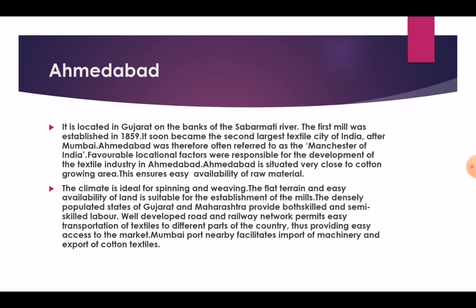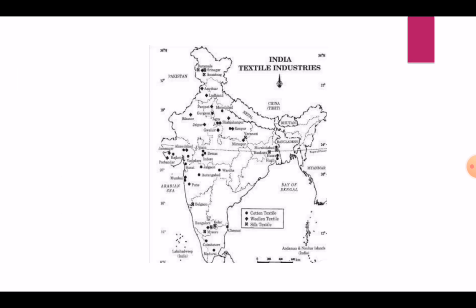Ahmedabad was therefore often referred to as the Manchester of India. Favorable locational factors were responsible for the development of the textile industry in Ahmedabad. Ahmedabad is situated very close to cotton growing areas, ensuring easy availability of raw materials. The climate is ideal for spinning and weaving. The flat terrain and easy availability of land is suited for the establishment of mills. The densely populated states of Gujarat and Maharashtra provide both skilled and semi-skilled labor. Well-developed road and railway networks permit easy transportation of textiles to different parts of the country, providing easy access to the market. Mumbai port nearby facilitates import of machinery and export of cotton textiles. Here are the Indian textile industries of India.